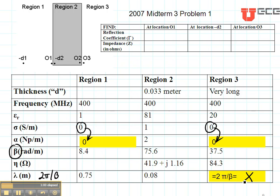The other constant that you need is eta, and eta for the case of air, which is shown right here, is 377 ohms.